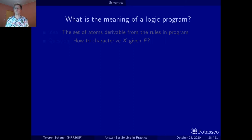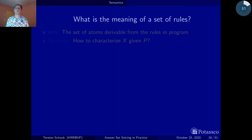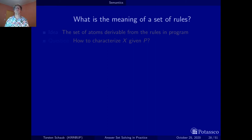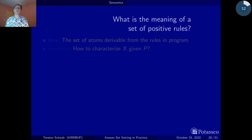The meaning of a logic program boils down to that of a set of rules. The idea of the reduct-based semantics is to go one step further: first handle the simple case of positive rules, and then, once one has a solution for this simpler case, generalize to arbitrary rules. The question we are looking at now is: what is the meaning of a set of positive rules?